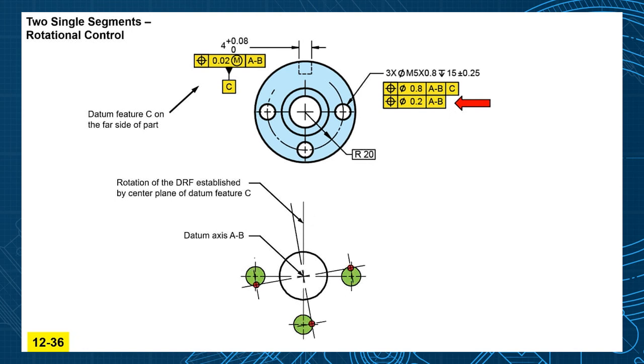That means the actual hole axes could be anywhere inside of both zones at the same time. They could be all up in here or they could be all up over here or they could be all up a different direction, as long as not one hole goes this way and the other hole goes that way because then they're not rotationally aligned to each other.